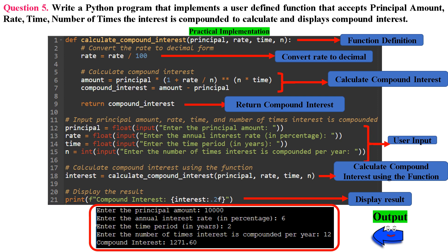Question 5: Write a Python program that implements a user-defined function that accepts principal amount, rate, time, and number of times the interest is compounded, to calculate and display compound interest. In line 1, we define a function called calculate_compound_interest that accepts four parameters: principal, rate, time, and n — representing the principal amount, annual interest rate, time period in years, and the number of times interest is compounded per year, respectively.